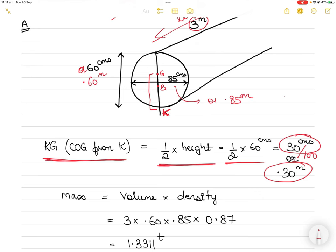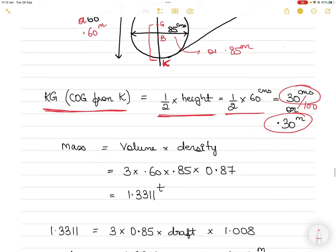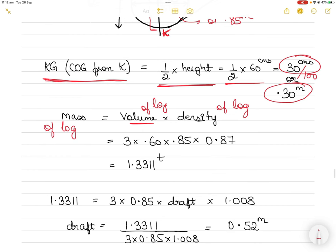Now you have to find where the center of buoyancy is. To do that, first find the mass of the log. Mass of the log equals volume of the log multiplied by density of the log. Volume of the log is length by width by height: 3 by 0.6 by 0.85, multiplied by 0.87 which is the relative density. Mass of the log is 1.3311 tons.